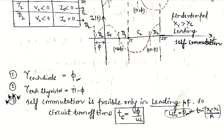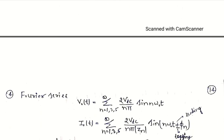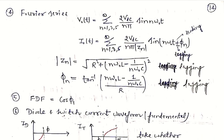Now for the Fourier series: since the output or load voltage waveform is independent of load type, it is the same as before — V₀ = Σ (n=1,3,5,...∞) (2Vdc / nπ) sin(nω₀t). For the output current waveform, we divide by the load impedance Zn, giving: I₀ = Σ (2Vdc / nπZn) sin(nω₀t ± φn), where plus is for the leading case and minus for the lagging case.